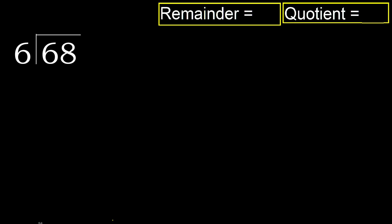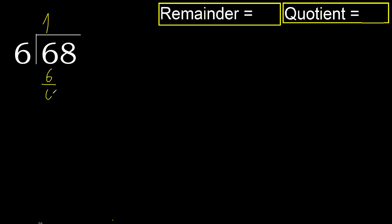68 divided by 6. 6 is not less, therefore with 6 here. 6 multiplied by which number is nearest to 6 but not greater? 6 multiplied by 2 is 12, which is greater. Multiplied by 1 is 6, which is not greater. Subtract 0.